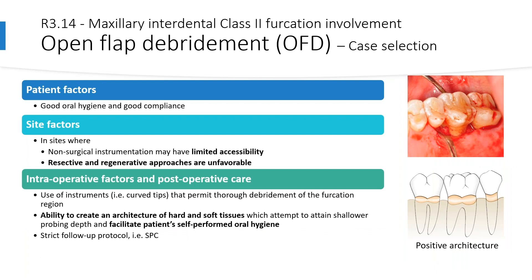An intraoperative factor to consider is the use of instruments such as curved tips that permit thorough debridement of the furcation region. For open flap debridement, we believe this modality is beneficial in sites where non-surgical instrumentation has limited accessibility and where resective and regenerative approaches are unfavorable. This treatment facilitates access for professional debridement and provides the opportunity to create an architecture of hard and soft tissues that attains shallower probing depth and facilitates patients' self-performed oral hygiene.